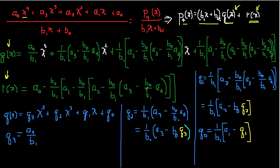Notice that the remainder has no x terms in it — that's because we're dividing by a first-order polynomial, so the remainder is just a constant. Now I want to figure out how my program will calculate the coefficients of q(x). These are all the coefficients I need for the quotient polynomial.